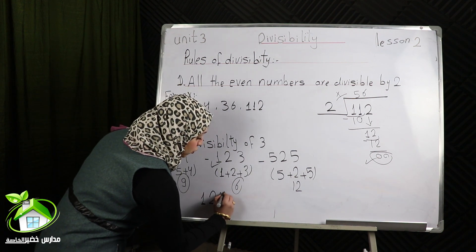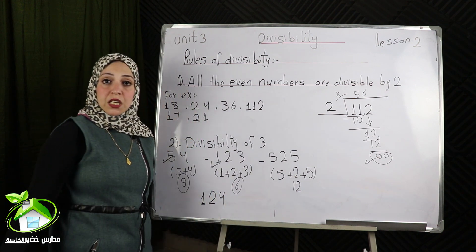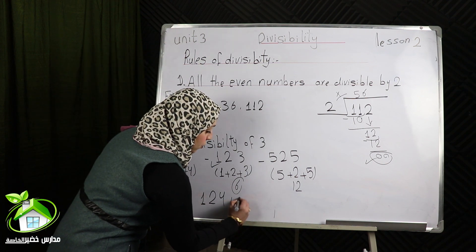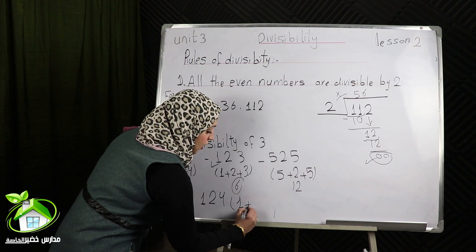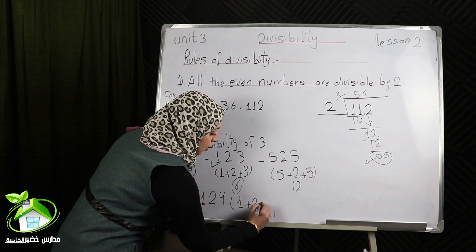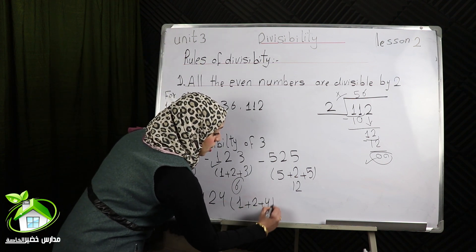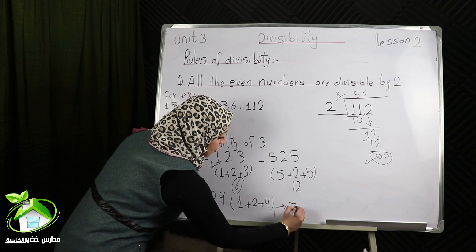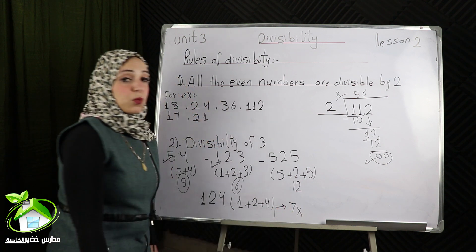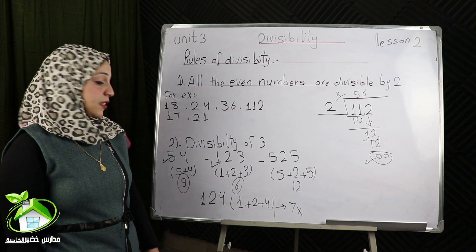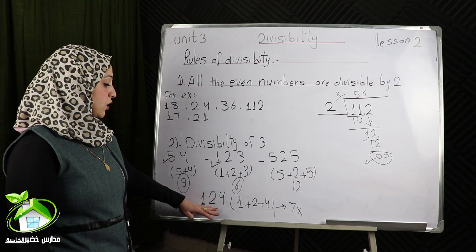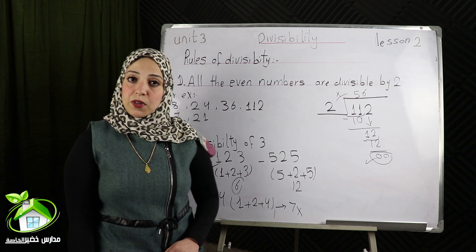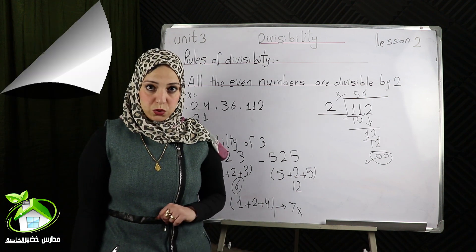124: I get the sum of its digits — 1 plus 2 plus 4 equals 7. 7 isn't divisible by 3, so 124 isn't divisible by 3 also.